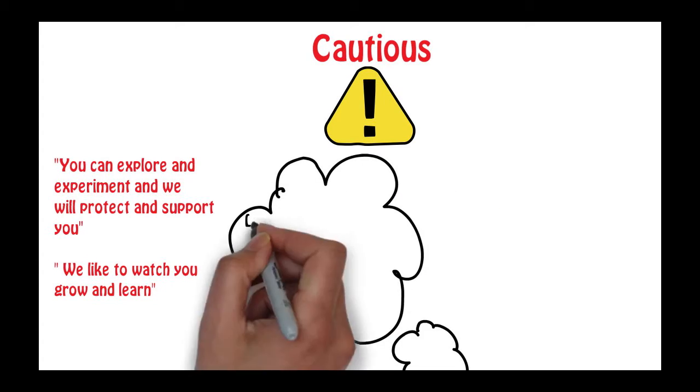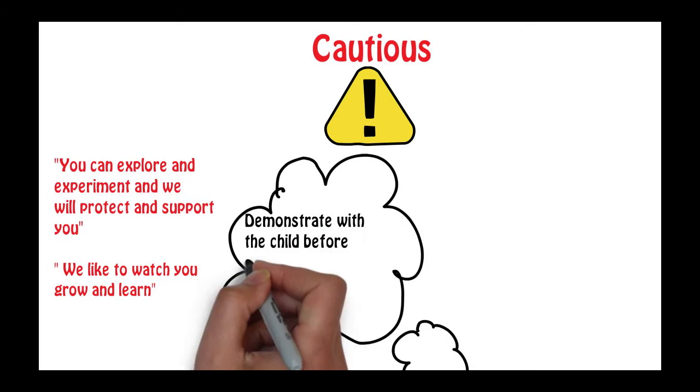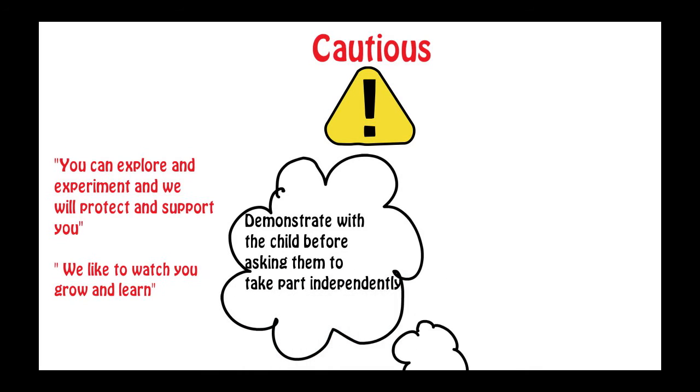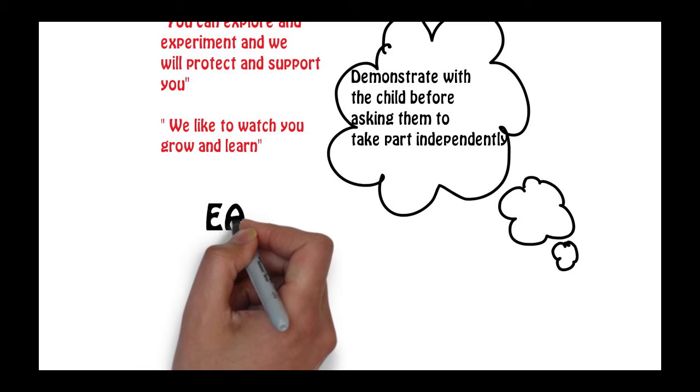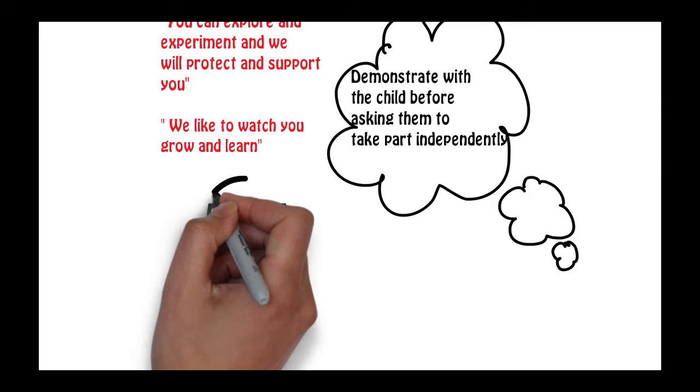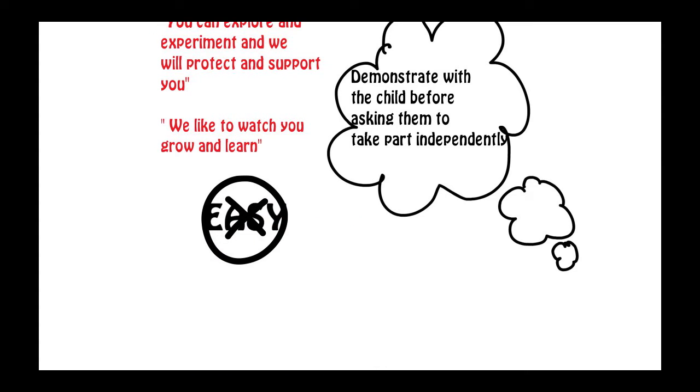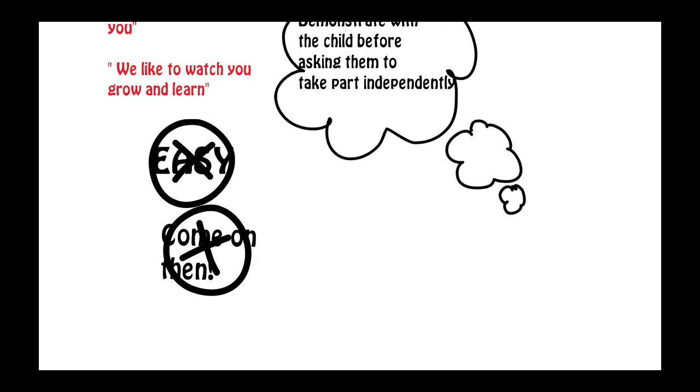So one strategy that has been helpful for me is to really try and demonstrate with the child before asking them to take part independently. I think it's very important when you are trying to encourage someone that is quite cautious to not use words such as 'oh that's so easy' or 'come on then' - with a child that's cautious these words are not going to help.